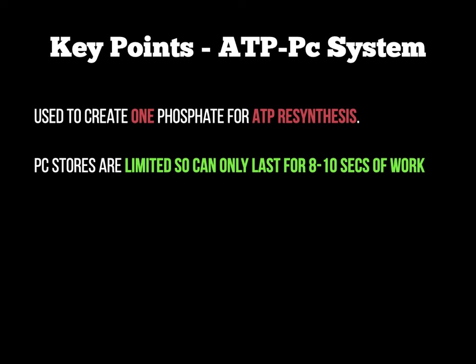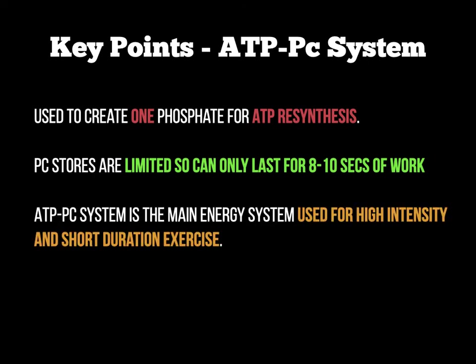We can only last around 8 to 10 seconds with this energy system. It is used for explosive and high-intensity exercise, or short-duration exercise — such as sprinting, jumping, and throwing. For these types of exercises, the body will immediately use the ATP-PC system to gain the phosphate to add into the resynthesis cycle.